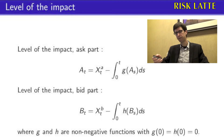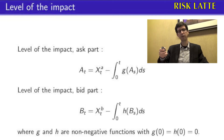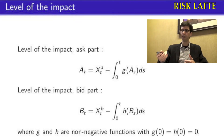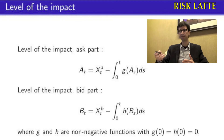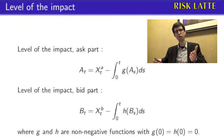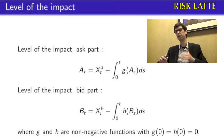The way it works: if we buy more shares, then XDA is going to increase, so the level of the impact is going to increase as long as we keep buying. But if our investor stops trading, XDA is going to stay constant while the integral is going to increase. Because it's minus the integral, the level of the impact is going to decrease. Our integral represents the number of new shares coming into the limit order book, which brings back the level of the impact.